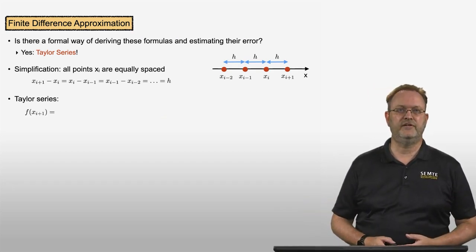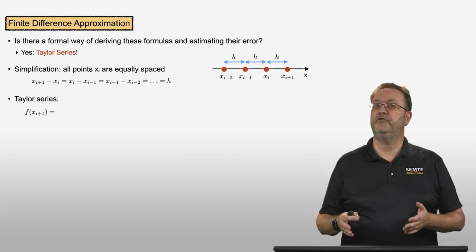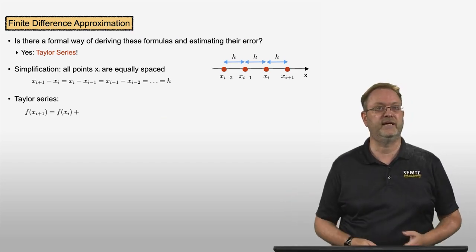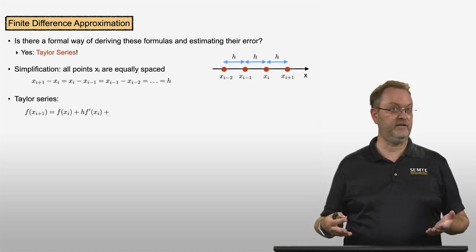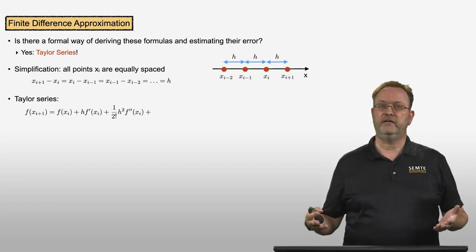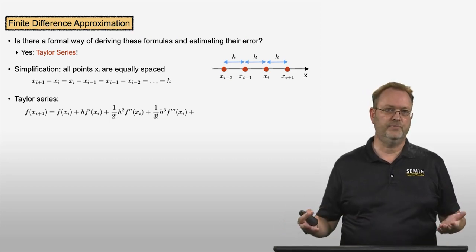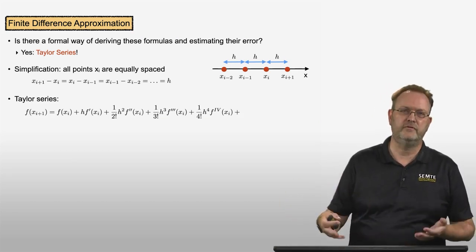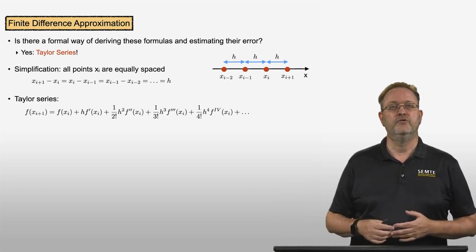Let's look at the Taylor series as a refresher. If I would like to evaluate a function at a point xi plus 1 using only the information at a grid point xi, I can do this using Taylor series. The function value at xi plus 1 equals the function value at xi, plus h times the first derivative at xi, plus 1 over 2 factorial times h squared times the second derivative at xi, plus 1 over 3 factorial times h cubed times the third derivative, plus 1 over 4 factorial times h to the power 4 times the fourth derivative, and so on — infinitely many terms to make this an equality.